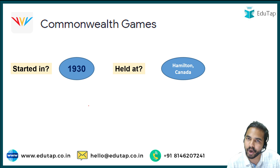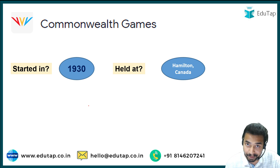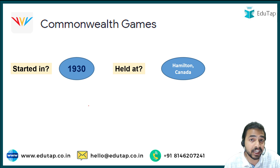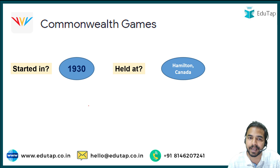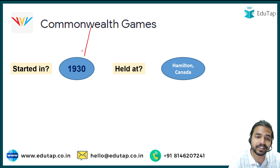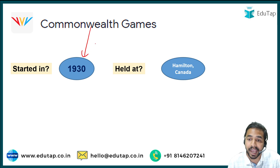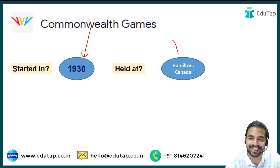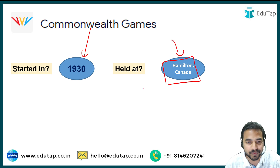As we all know, the Commonwealth Games have concluded recently in Birmingham. A question must be arising — when did they first start? These games were first held in 1930, and the venue was Hamilton, Canada, where the first edition of the Commonwealth Games was held.